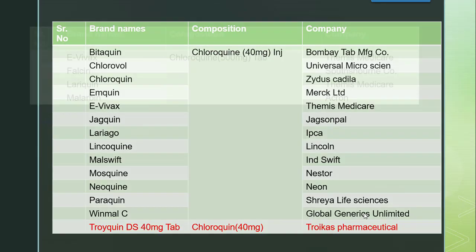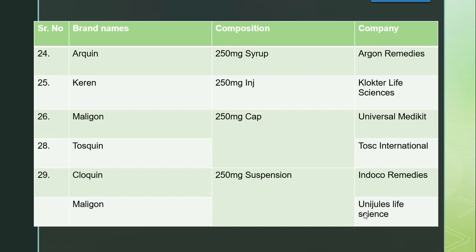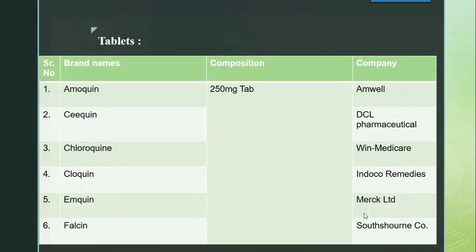Now we will go through the different brands one by one. In an exam, you are not expected to write all these brands and manufacturers — just a few well-known ones. Since chloroquine is an important and ancient drug, we will cover all possible brands. For 250 mg tablets: Ammoquine by Amwell, Ciquine by DCL Pharmaceutical, Chloroquine by Win Medicare, Chloroquine by Indoco Remedies.